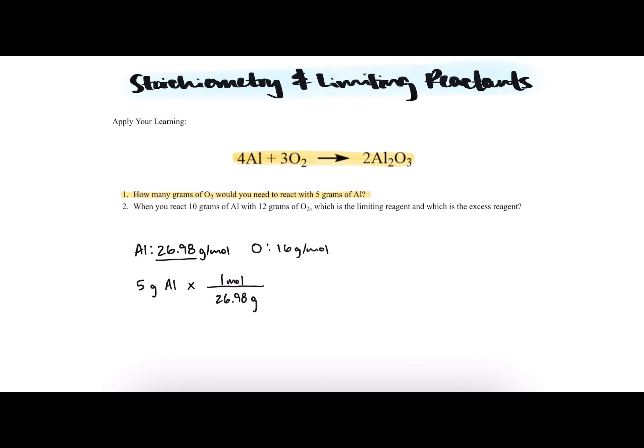So if we start with 5 grams of aluminum and divide by the molar mass of aluminum, we can find how many moles of aluminum there are.